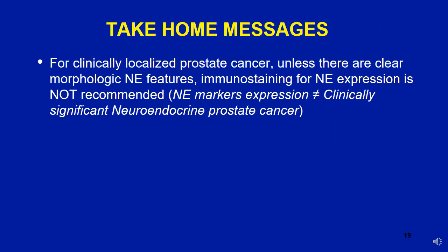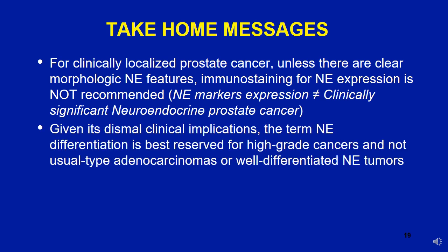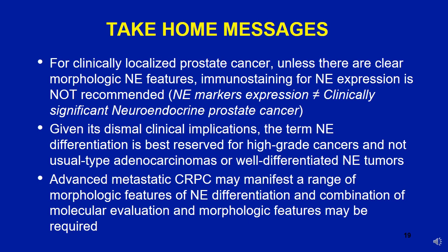Final take-home points: for clinically localized prostate cancer, unless there are clear morphologic neuroendocrine features, immunostaining for neuroendocrine expression is not recommended, because neuroendocrine marker expression does not equate to clinically significant neuroendocrine prostate cancer. The term neuroendocrine differentiation is best reserved for high grade cancers and not usual-type adenocarcinomas or well-differentiated neuroendocrine tumors. In advanced metastatic castration-resistant prostate cancer, a range of molecular features of neuroendocrine differentiation may manifest, and combination of molecular evaluation and morphologic features may be required. This metastatic setting is still an evolving area with a lot of research ongoing.